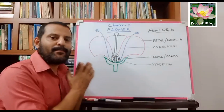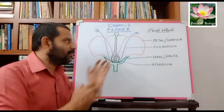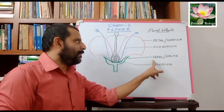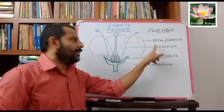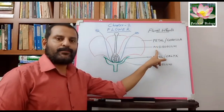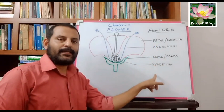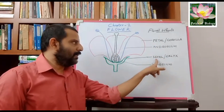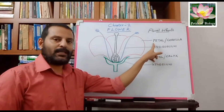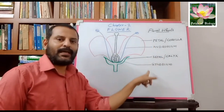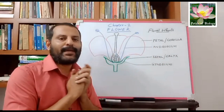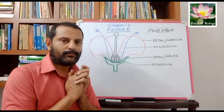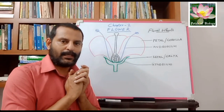So these are the four main parts of a flower: sepal, petal, stamen, and gynoecium. These are the four main parts of a flower.